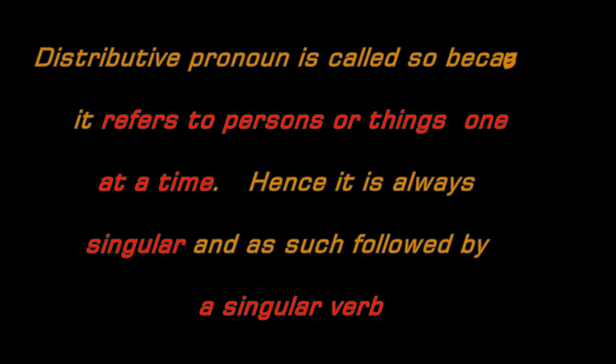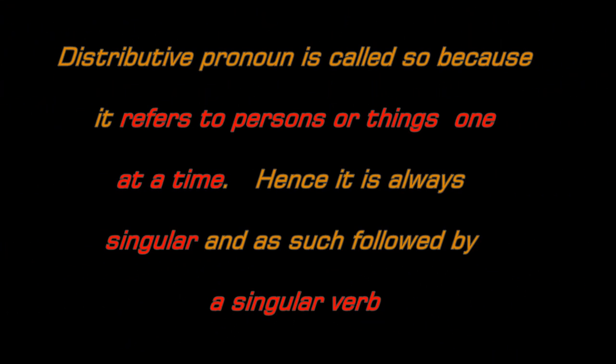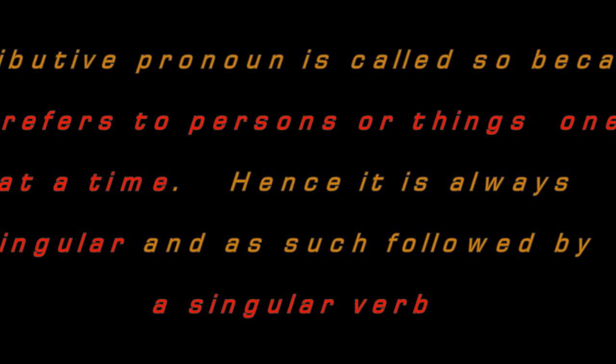Distributive Pronouns are: Either, Neither. Because they refer to persons or things one at a time, they are always singular and as such followed by a verb in the singular form.